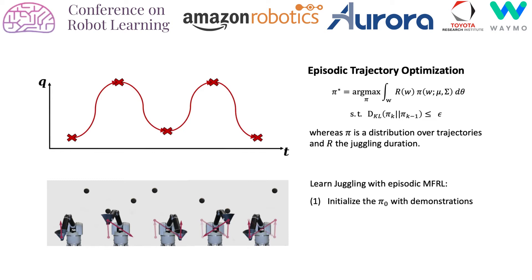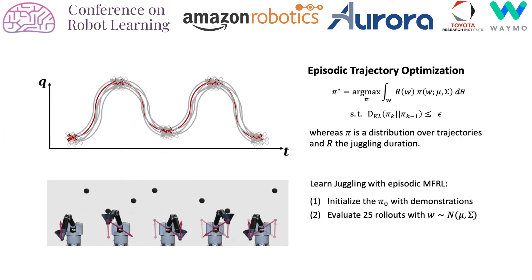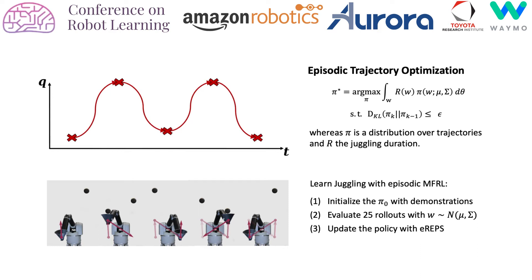In each episode, a batch of rollouts is sampled. Then all rollouts are evaluated using a binary reward function that returns a constant value if no ball has dropped. This way, the episode return r is proportional to the successfully juggled time, which we limit to a maximum of 10 seconds. Using episodic REPS, we improve the search distribution by maximizing the expected return while complying to a KL bound on the update. This process is repeated until convergence.